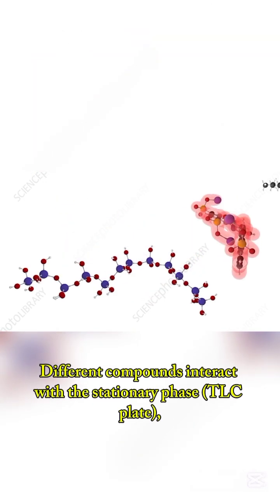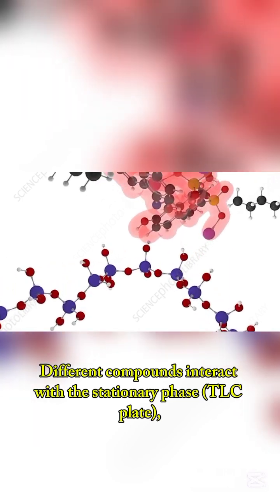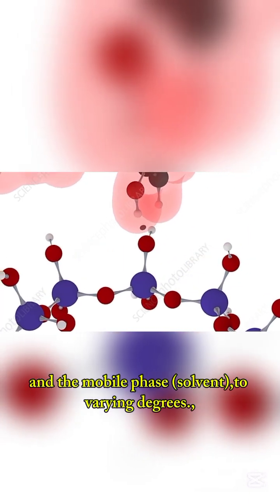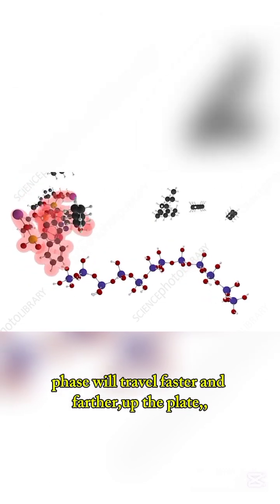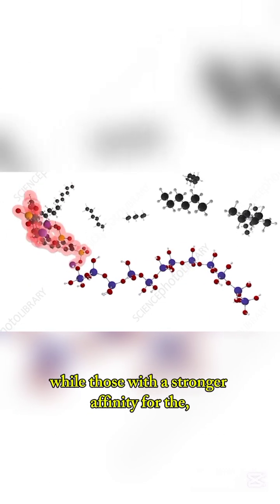Different compounds interact with the stationary phase, TLC plate, and the mobile phase, solvent, to varying degrees. Those with a stronger affinity for the mobile phase will travel faster and farther up the plate, while those with a stronger affinity for the stationary phase will travel slower and shorter distances.